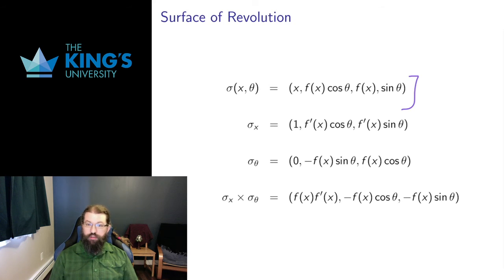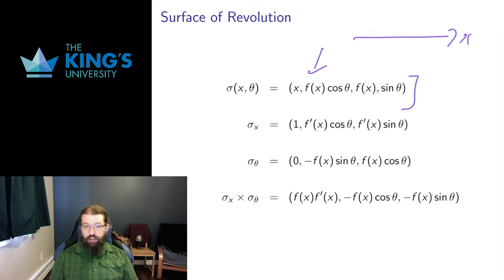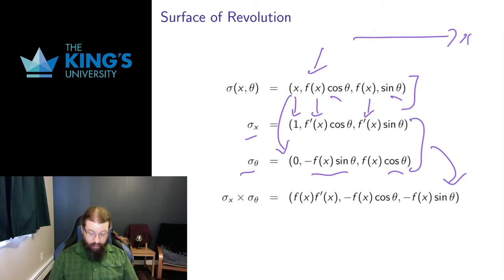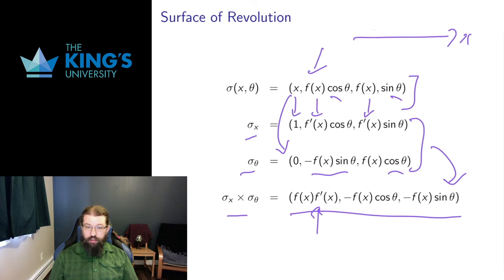I can do the same for a surface of revolution. Here's the parametric description of a surface of revolution of a function of one variable around the x-axis. Taking the partials in x: the partial of x is 1, F becomes F-prime. Taking the partials in theta: the partial of x is 0, cosine becomes negative sine, sine becomes cosine. Taking the cross product gives the normal, which is a somewhat complicated expression. But it has an x-coordinate that depends on the original function, and then the same circular symmetry for the y and z-coordinates — which makes sense, since we expect the normals to also have circular symmetry pointing out from the object perpendicularly.